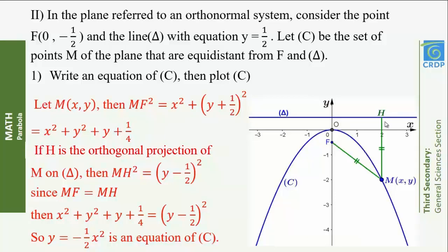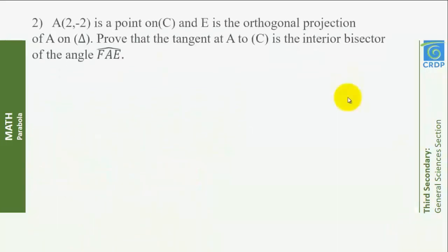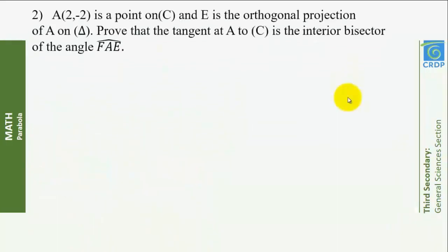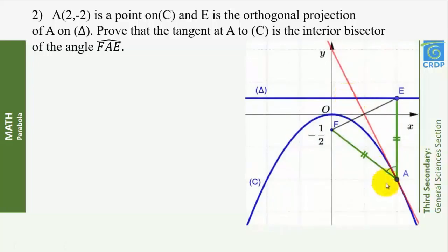Notice that if we move M on C, it will remain equidistant from F and delta. Second question: the point A of abscissa 2 and ordinate −2 is a point on C, and E is the orthogonal projection of A on delta. Prove that the tangent at A to C is the anterior bisector of the angle FAE.